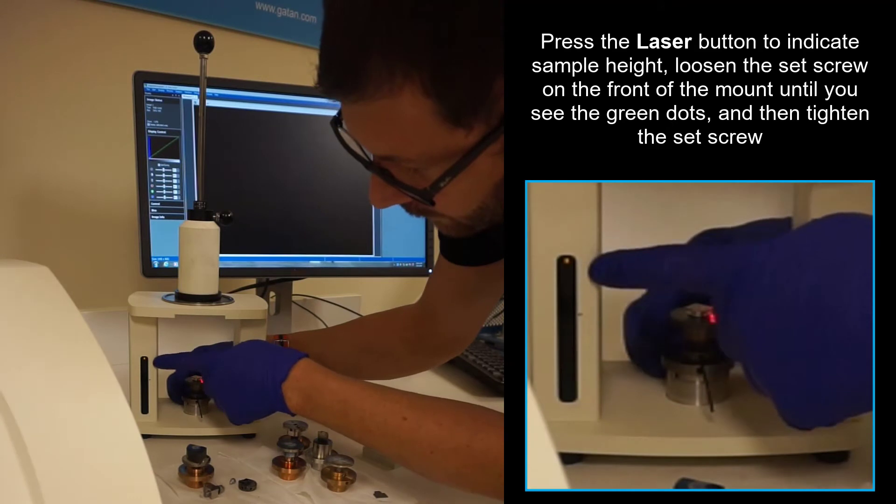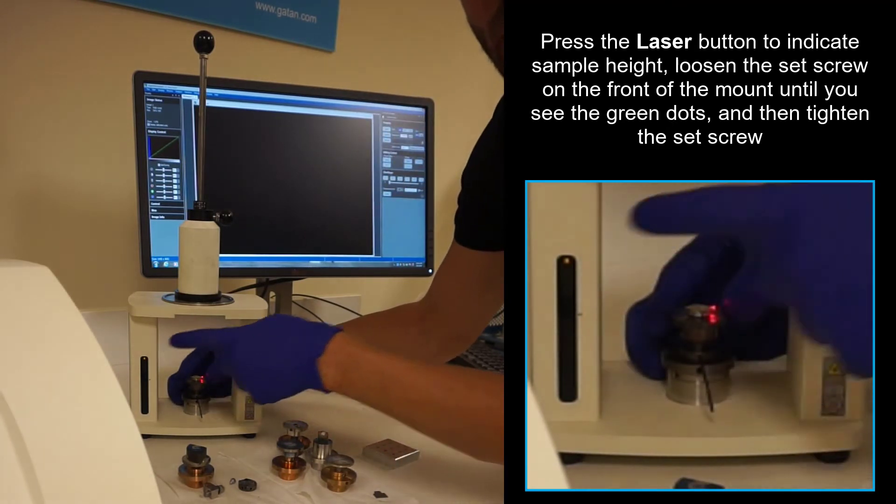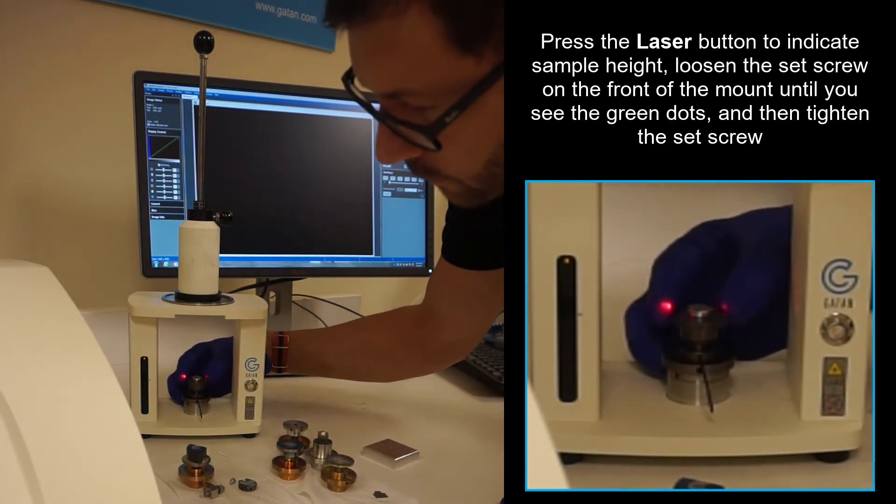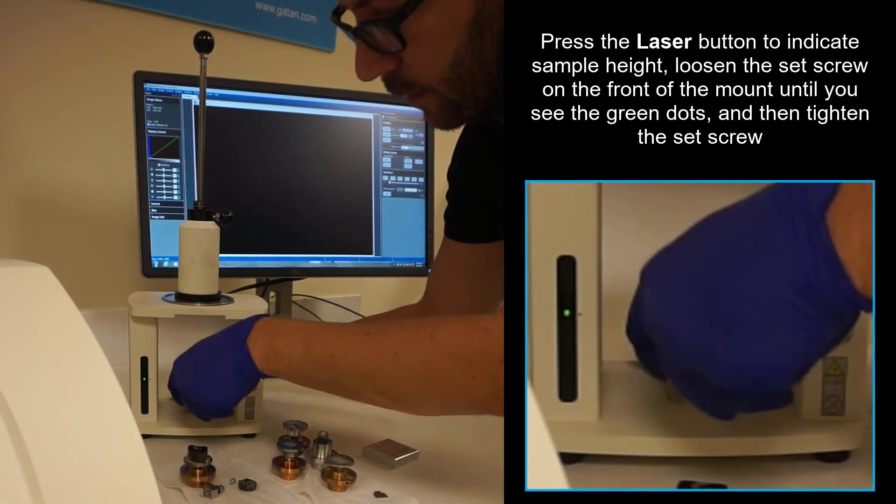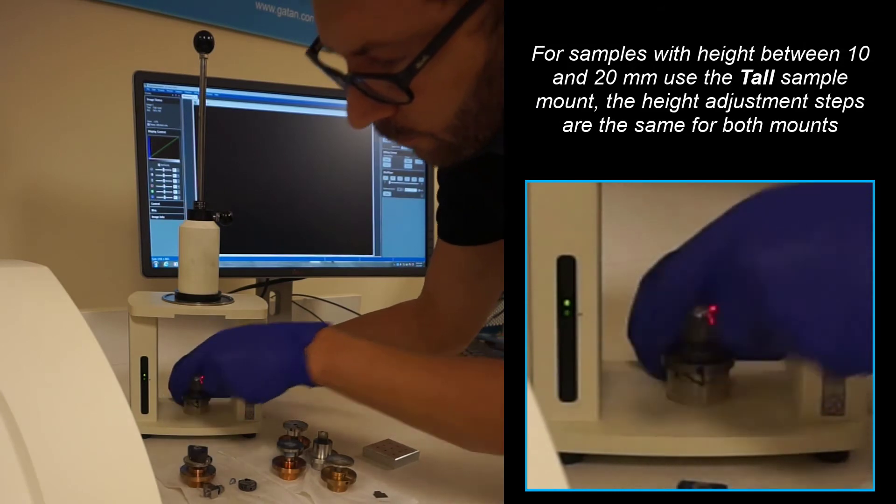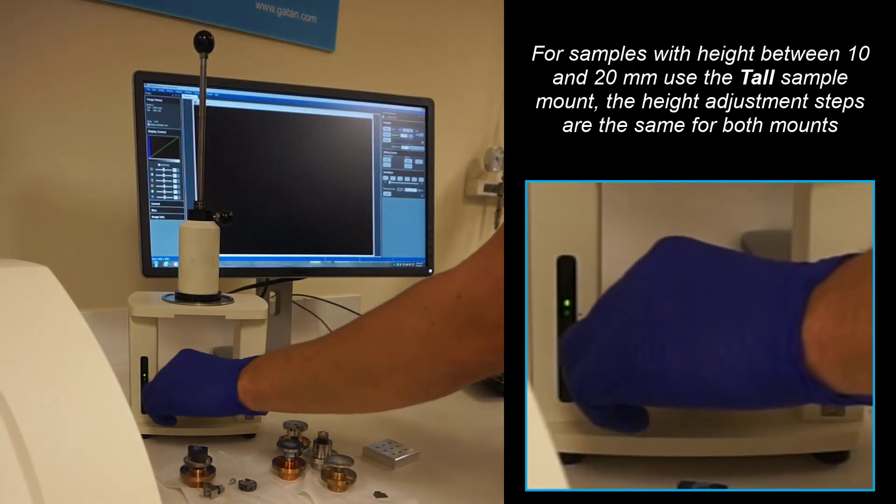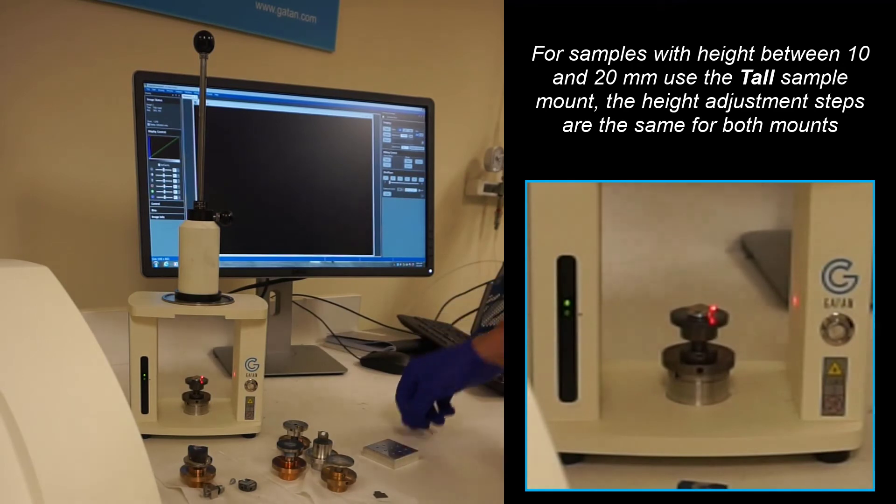Now we can follow these lights. Right now it's on yellow, which means it's a little bit out of place. We want to be in the green. Now we're in the green, tighten the set screw back.